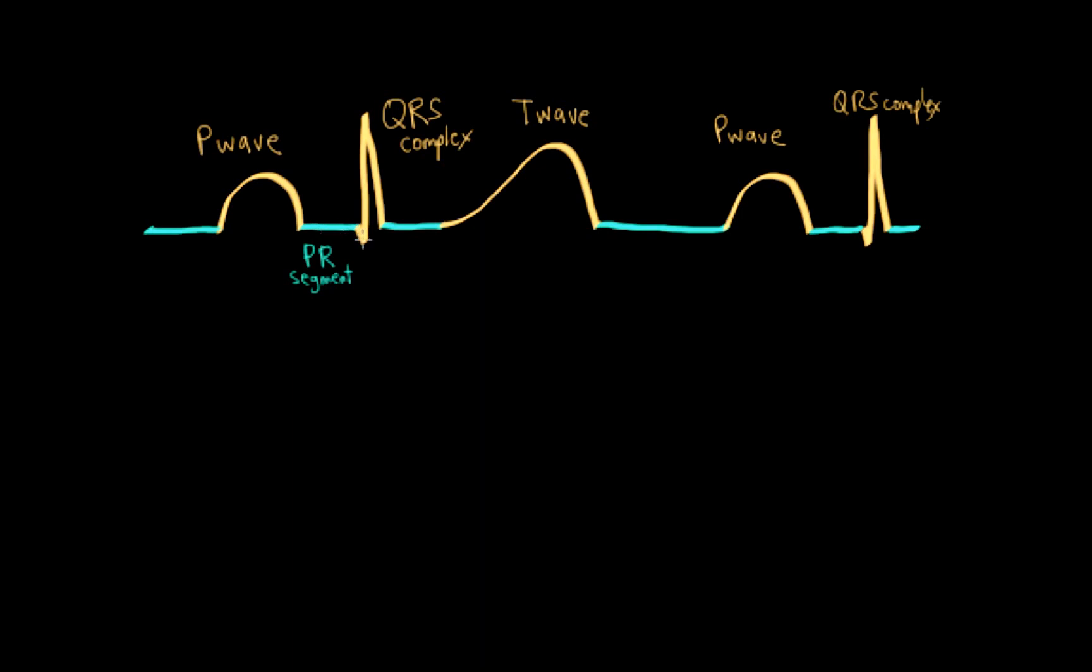The next important segment is called the ST segment, and it's from the end of the QRS complex to the beginning of the T wave. Normally, it's also isoelectric, although in some individuals it may slightly be a little positive or negative, usually no more than one millimeter or so.